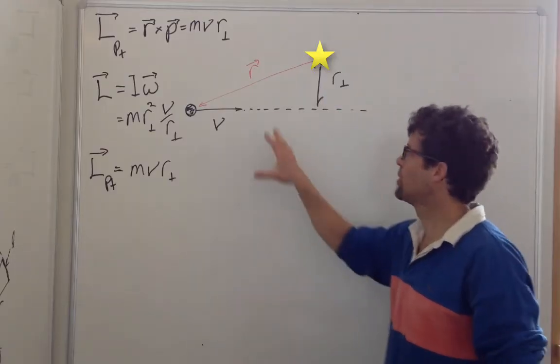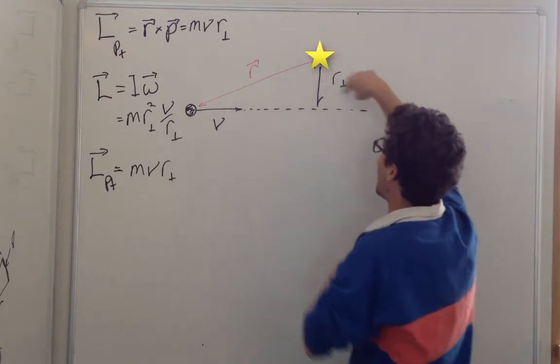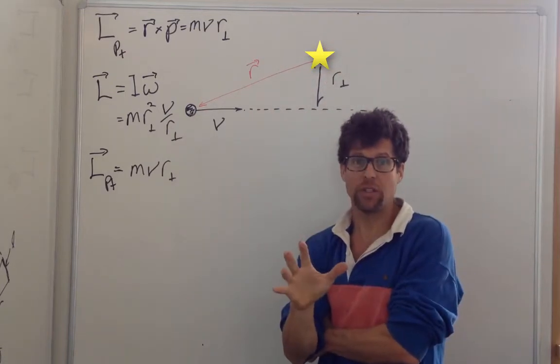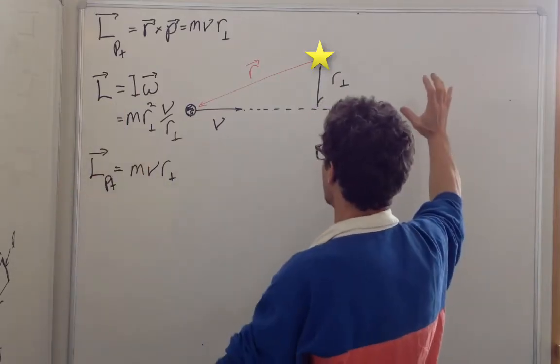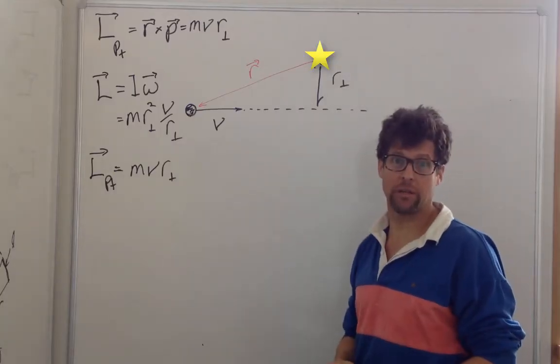First of all, we know the system has angular momentum, because after I catch it, I'm rotating. We are rotating. And angular momentum is always conserved if there's no outside torques. There's no outside torques here. And I have angular momentum after it hits me. So there always was angular momentum.